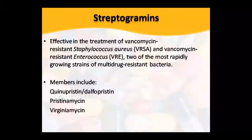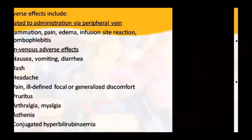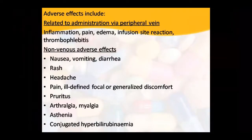Streptogramins — the drugs in this class include pristamycin and rifamycin. Adverse effects include peripheral vein inflammation, pain, edema, and infusion site reactions, as well as thrombophlebitis if given intravenously. If given orally, adverse effects include nausea, vomiting, diarrhea, skin rashes, and pain.